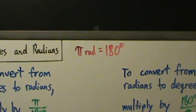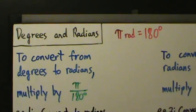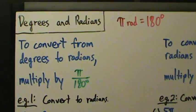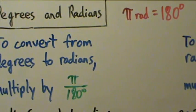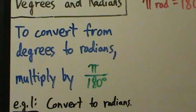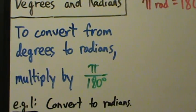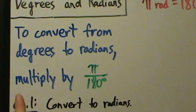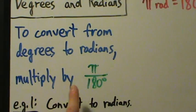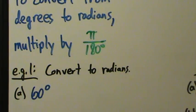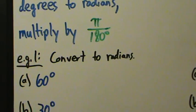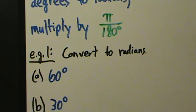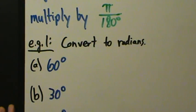If we want to convert from degrees to radians, multiply the number of degrees you have by pi over 180 degrees. So example one: convert these to radians.